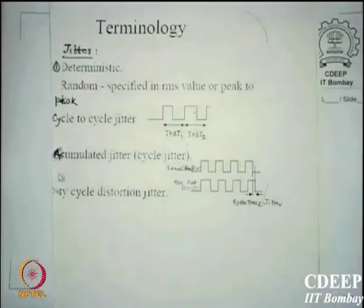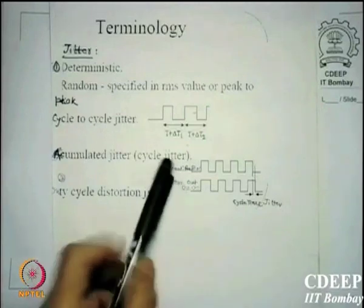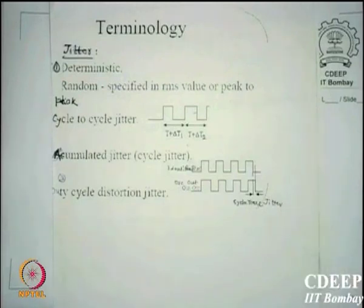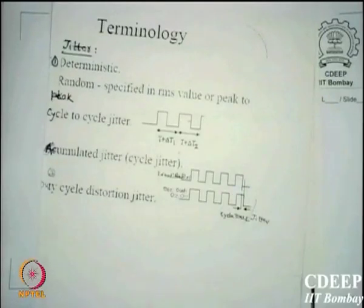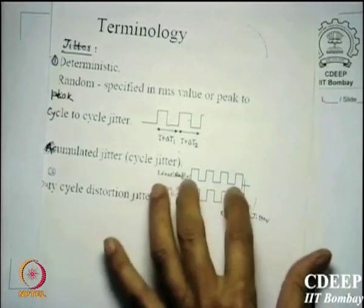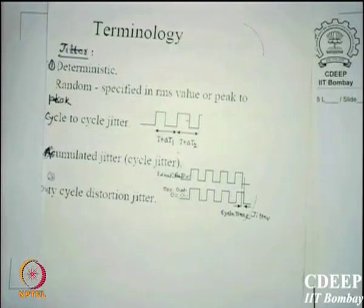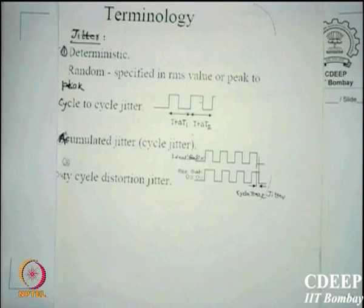There is also duty cycle distortion jitter — a 50% duty cycle may become 49% or 51%, causing further problems. Cycle-to-cycle and accumulated jitter are standard specifications in PLL and analog design books. DLL (Delay-Locked Loop) is a related but different system — some books do not differentiate between PLL and DLL, so be careful not to confuse them.